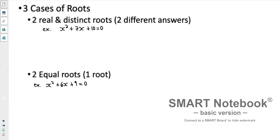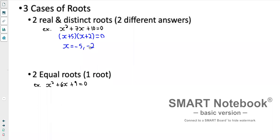We have three cases of roots. The first is two real and distinct roots, where we have two different answers for x. For example, if we have x² + 7x + 10 = 0, if we factor that we get (x + 5)(x + 2) = 0. So x equals negative 5 and negative 2. We have two unique answers for x. That's two real and distinct roots.